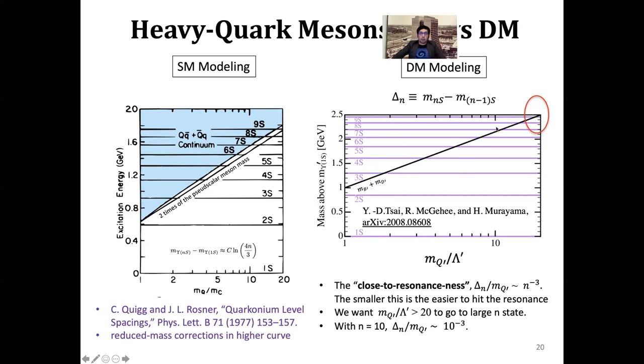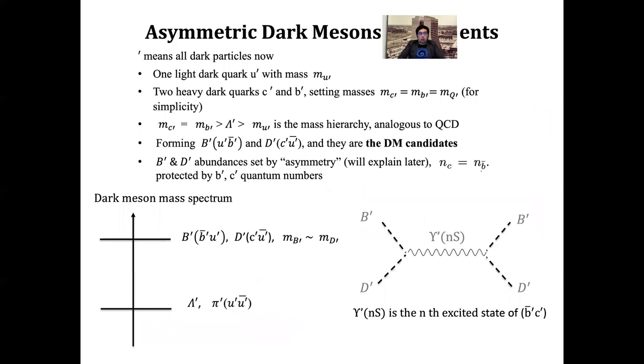This plot is the level of these resonances. This curve is two times the mass of the dark meson. The dark meson can hit the resonance easier when your M_Q is large. The closeness to resonance is about n times 10^-3, where n is what level you go to. If you move along this axis, the change in M_Q compared to how close you are to this gap is 10^-3. It's very dense, there's a lot of dense states, so it's very easy for you to hit the resonance. The smaller this number is, the easier it is to hit the resonance.